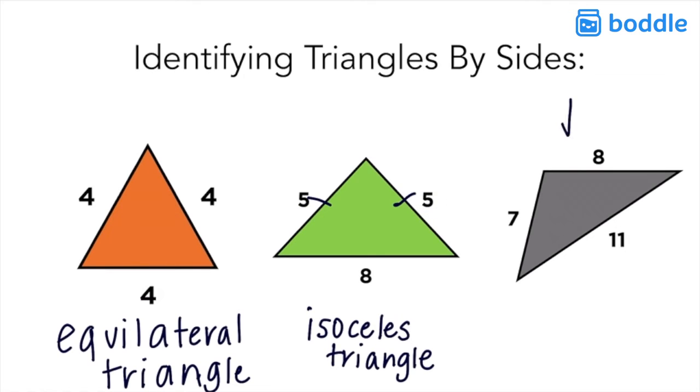Our final triangle, the gray triangle, has no equal sides. We see that one side is eight, another one has seven, and then the longest side is eleven. When a triangle has no equal sides it's called a scalene triangle.